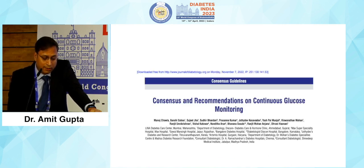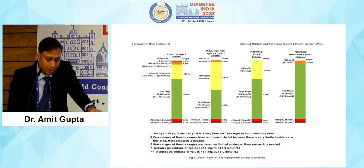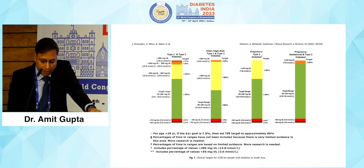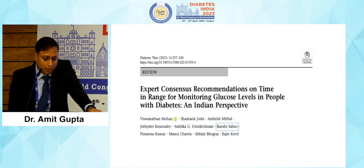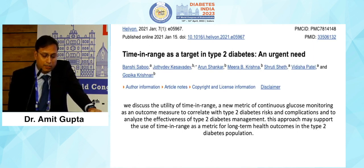There is also a consensus and recommendation on continuous glucose monitoring where TIR targets for type 1 and type 2 diabetes have been recently redefined. An expert consensus recommendation on time in range for monitoring glucose levels in people with diabetes from the Indian perspective highlights TIR as a target in type 2 diabetes — and this is an urgent need.